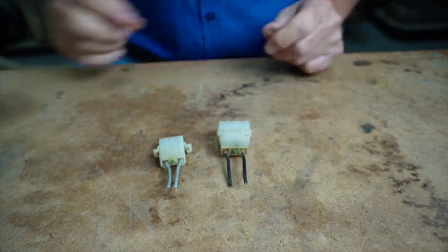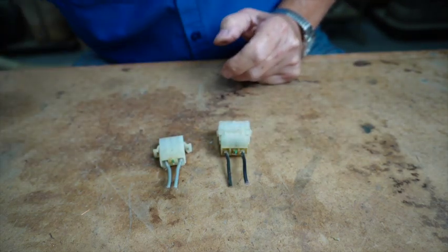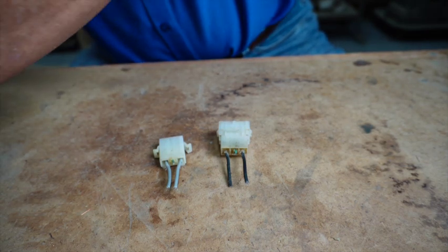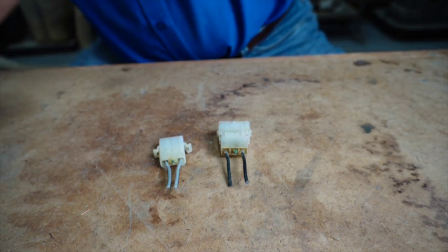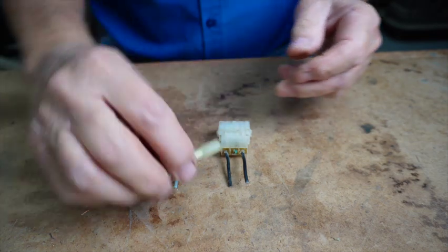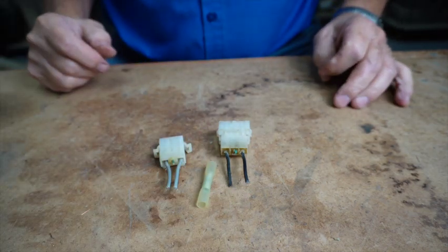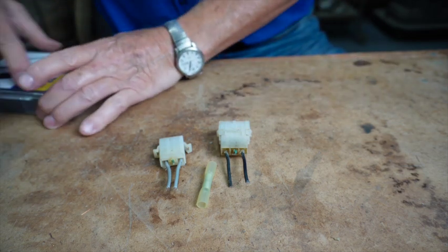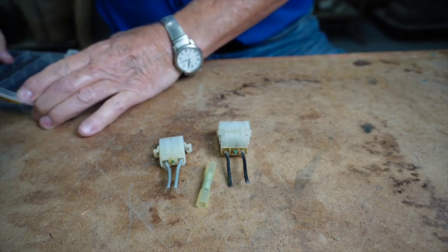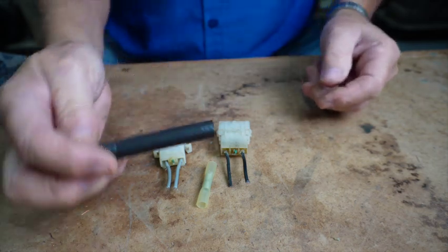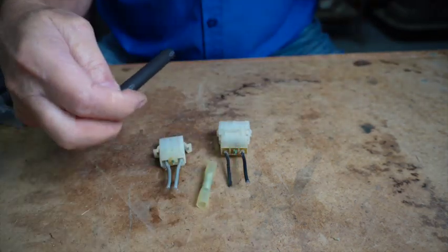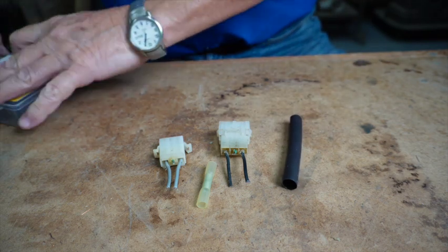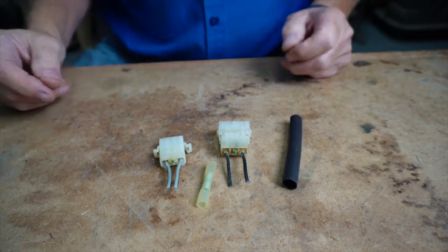Now, we have our two pieces. What we're going to do is use an inline splicer to connect all four of those wires. And, just to make it look pretty, let me take a piece of heat shrink and put it on there, too. This will be the right size.